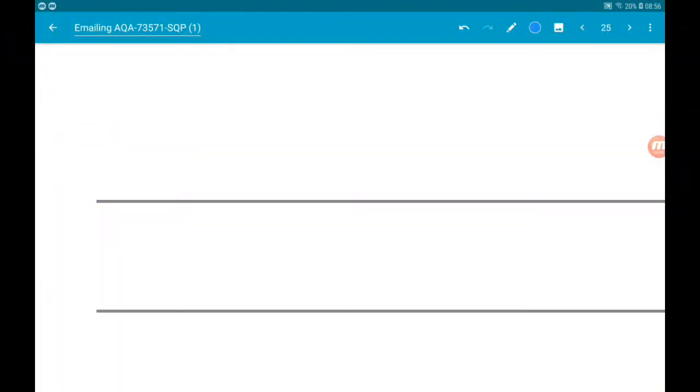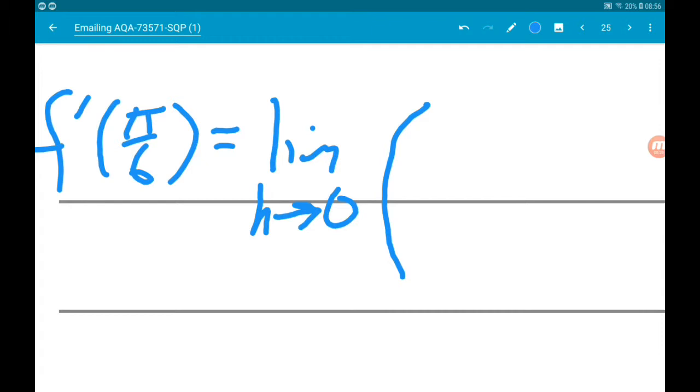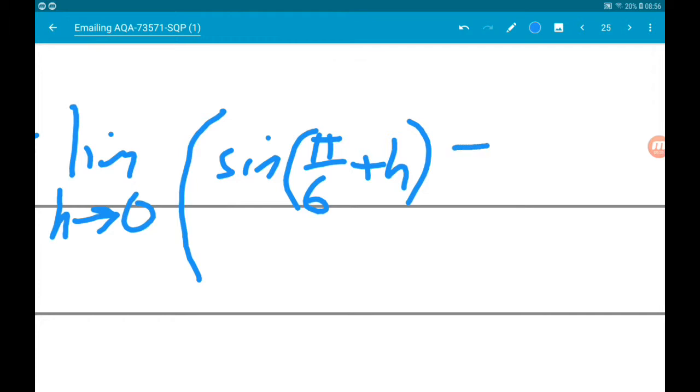Okay, so using that, we know that f dashed of pi over six is going to be equal to the limit as h tends to zero of sine of pi by six plus h minus sine of pi by six, all over h.